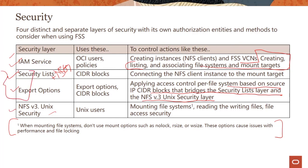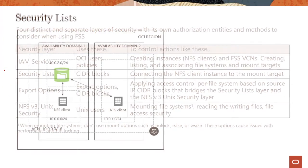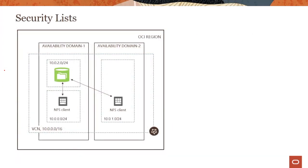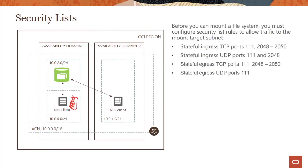In this particular module, we'll look into security lists and export options in greater detail. As we saw in the previous demo, we had another client running in the same subnet. For clients to access the file system and the mount target, you had to open certain ports — specific TCP and UDP ports for ingress, and specific ports for egress.